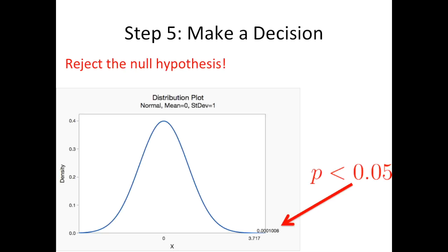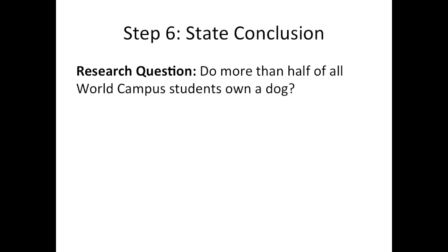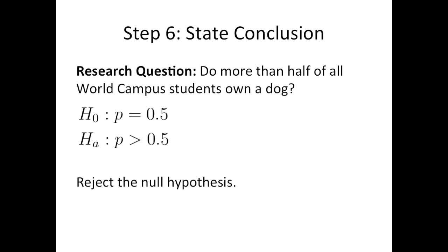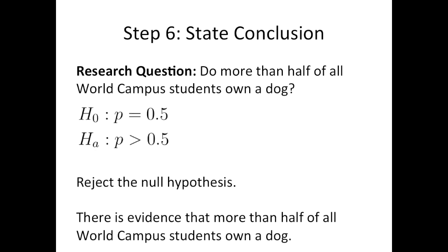Regardless of whether you use the rejection region approach or the p-value approach, your decision should be the same every time. Step 6: state conclusion. Recall our original research question: do more than half of all World Campus students own a dog? Our null hypothesis was that the population proportion equals 0.5 and the alternative hypothesis was that it is greater than 0.5. In both approaches we reject the null hypothesis. Our conclusion is that there is evidence that more than half of all World Campus students own a dog.